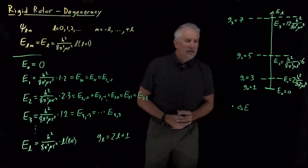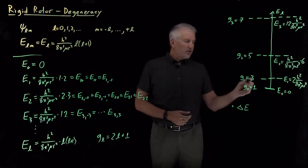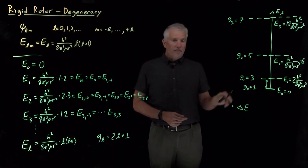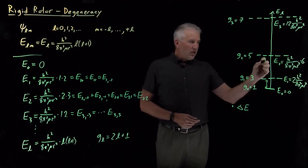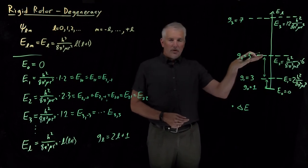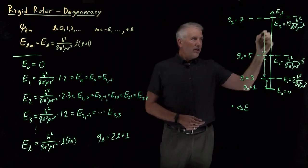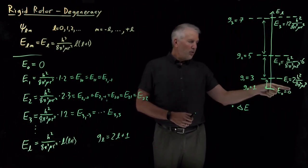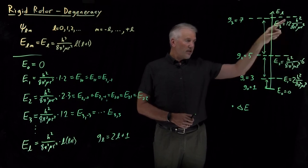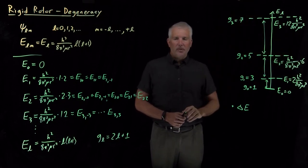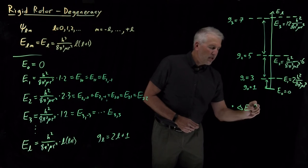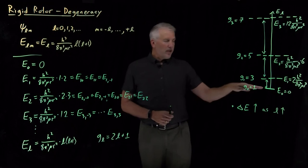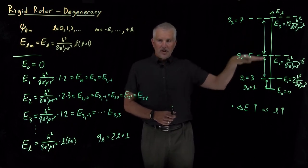Number one, let's ask ourselves what happens to the gaps between these energy levels. So, the gap between energy level 0 and energy level 1 is smaller than the gap between energy levels 1 and 2, which is smaller still than the gap between energy levels 2 and 3. So, that gap increases from two times these constants to four times the constants to six times the constant. That gap keeps increasing as we climb the ladder. So, that gap between energy levels increases as the quantum number increases, as we get more and more excited on this rotational energy ladder.